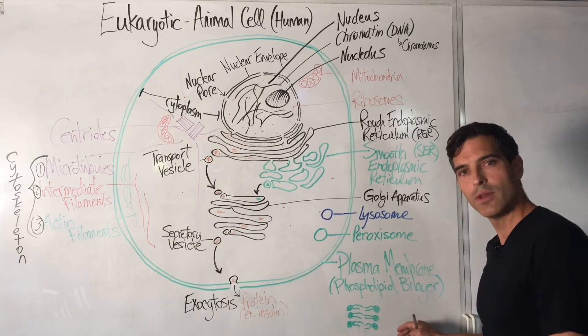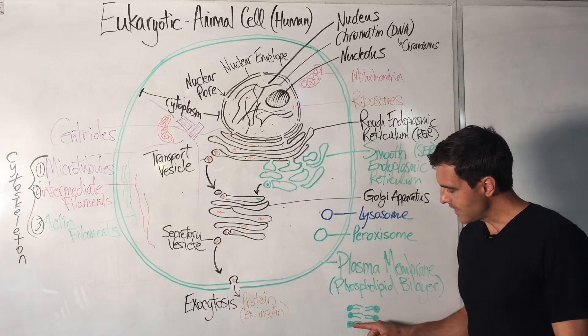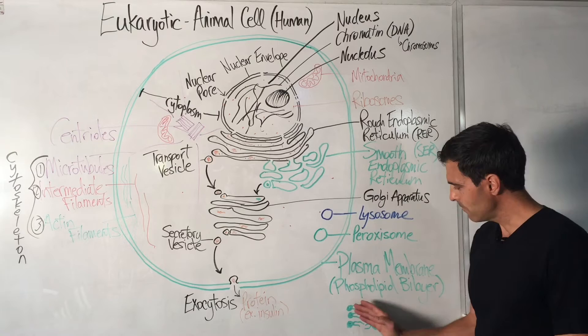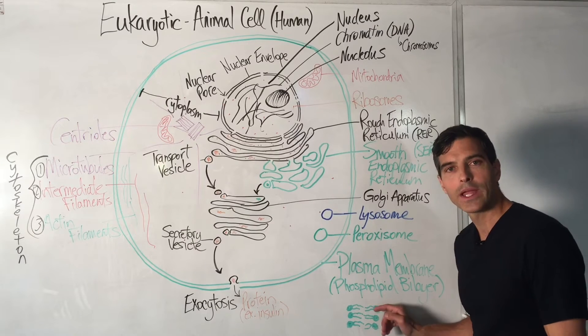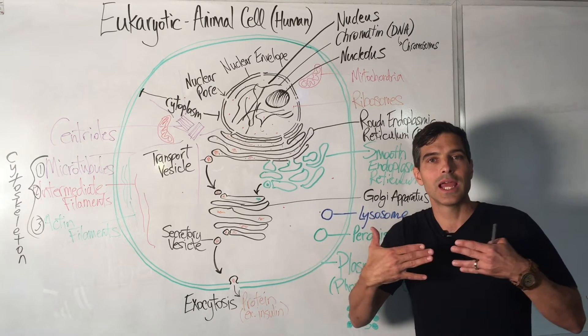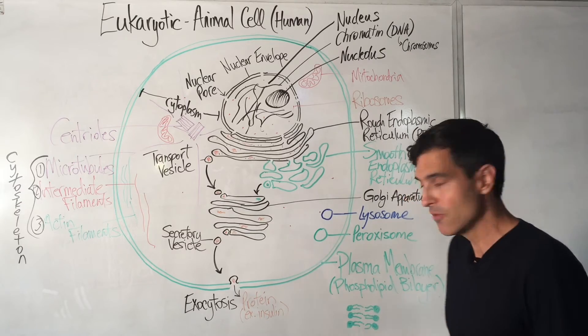So, here's what the phospholipid bilayer looks like. You have the hydrophilic heads, they're polar heads, facing the water side, and then you have the hydrophobic tails. The hydrophobic tails will always line up against each other because they hate water. They have a fear of water.